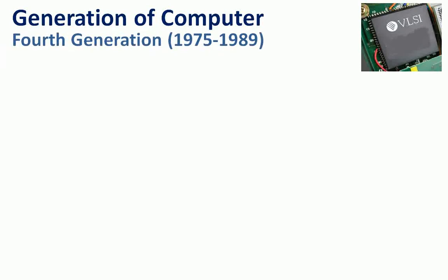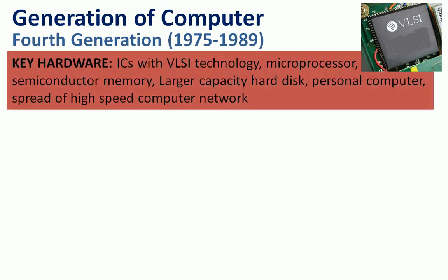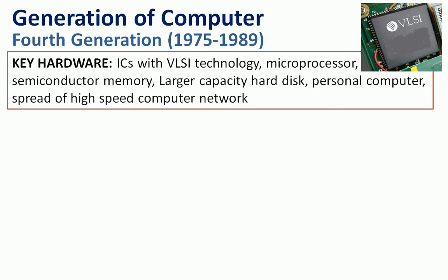The fourth generation period is 1975 to 1989. The key hardware are integrated circuits with very large scale of integration technologies, microprocessor, semiconductor memory, larger capacity hard disk, personal computer, and spread of high speed computer networks.